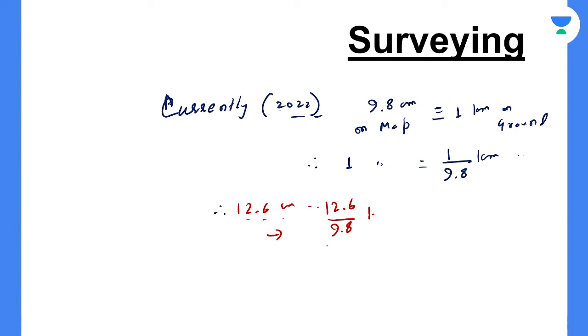12.6 centimeter on the map will represent how much kilometer on the ground? It's 12.6 divided by 9.8. If you solve this, you will get 1.286 kilometers. So in this fashion you can calculate using simple unitary method.